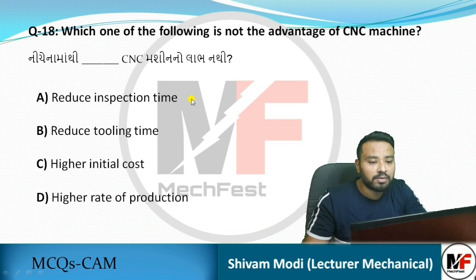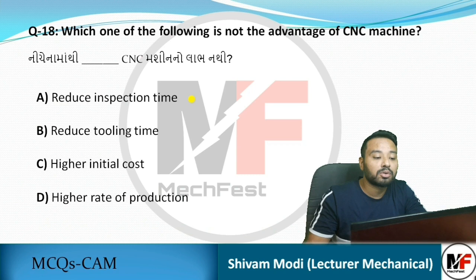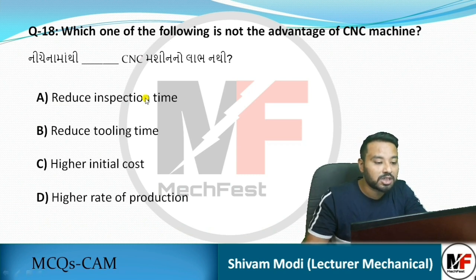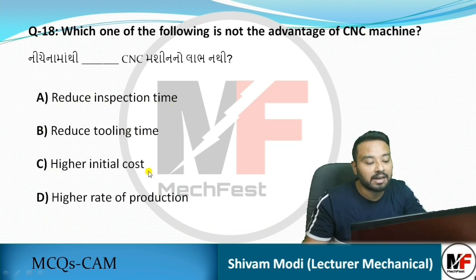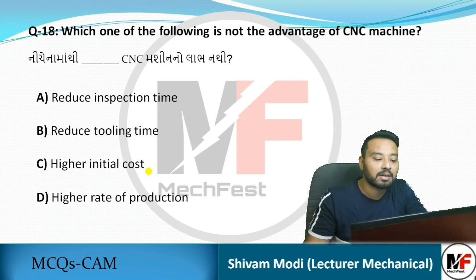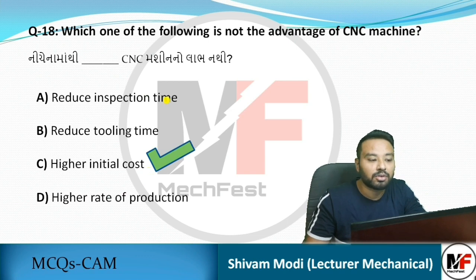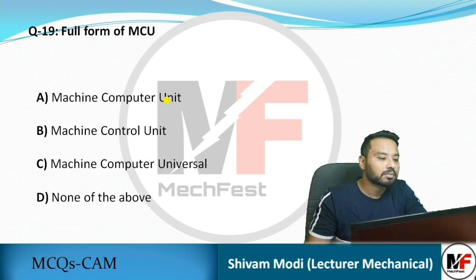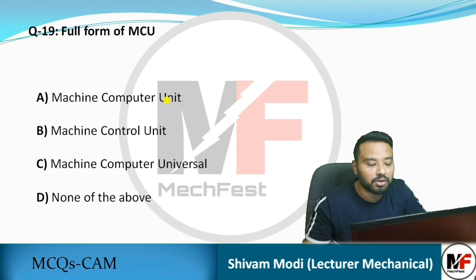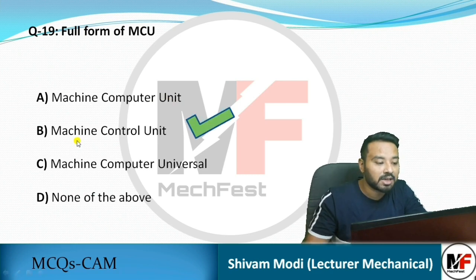Next MCQ: Which of the following is NOT an advantage of CNC machines? Options: reduce inspection time – that is an advantage; reduce tooling time – that is an advantage; higher initial cost – friends, a higher initial cost is not an advantage, it is actually a disadvantage. So the answer is C – higher initial cost is not an advantage of CNC machines. Also, the full form of MCU is Machine Control Unit, so the answer is B.